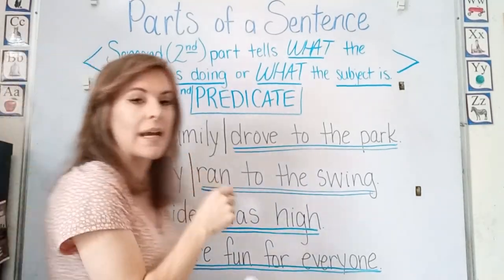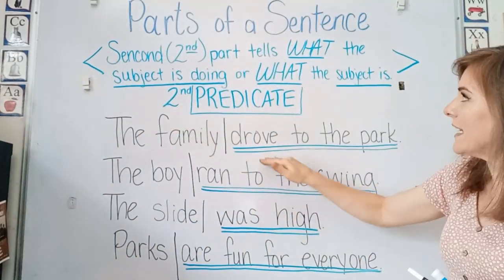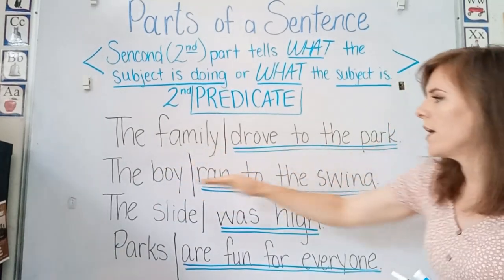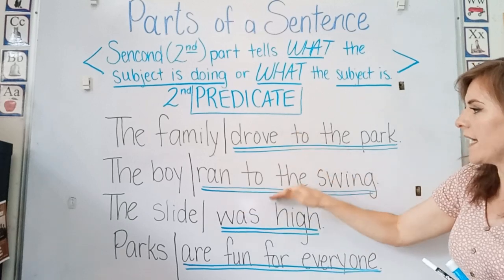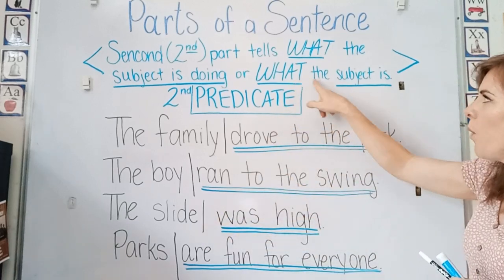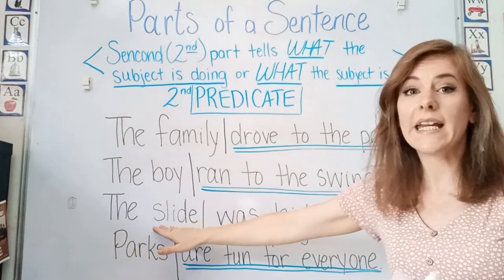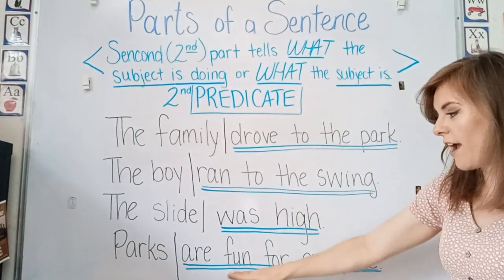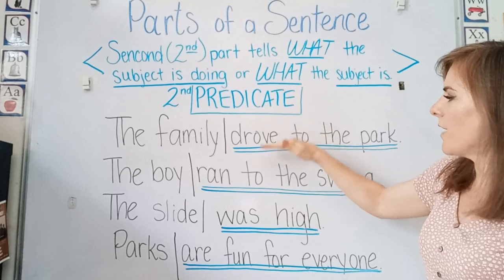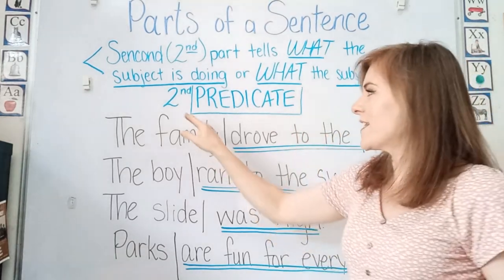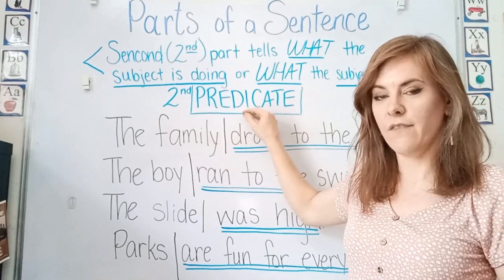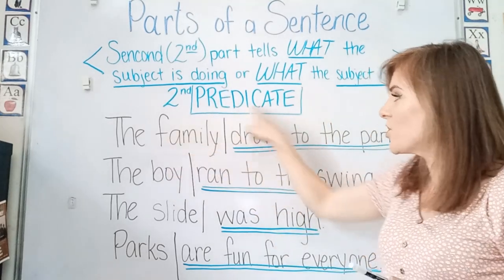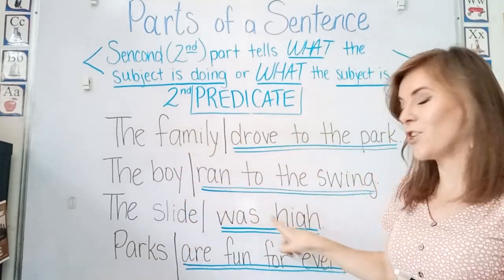Here are two examples of predicates that are telling you what the subject is doing — the family drove, the boy ran, and these are the predicates. And then these two are giving you an example of what the subject is. What is the slide? It's high. What are parks? They're fun for everyone. So this part of our sentence, which is the second part, is the predicate part of our sentence. It tells us what the subject is doing or what the subject is.